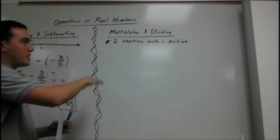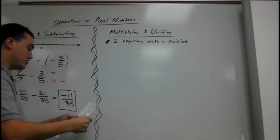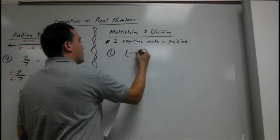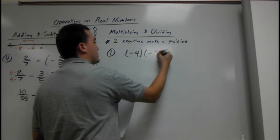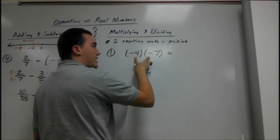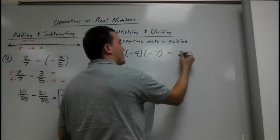When we're multiplying and dividing, make sure to remember two negatives make the positive. Say we had number one, negative four times negative seven. Negative times a negative is a positive, two negatives, count them up, four times seven is a positive twenty-eight.